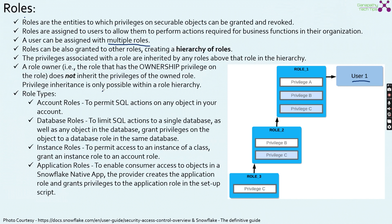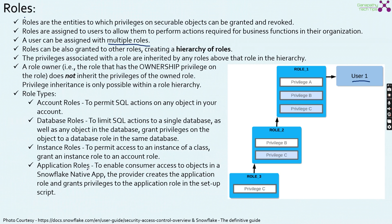There are four different role types: account roles, database roles, instance roles, and application roles. Account roles permit SQL actions to any object in your account. Database roles permit SQL actions to a single database as well as any object within that database — grants on objects are limited to objects in the same database. Instance roles permit access to an instance of a class; you grant the instance role to an account role. Finally, there is something called an application role, very helpful when defining or creating an application within Snowflake — for example, a Streamlit app. To enable customer access to objects in a Snowflake native app, the provider creates the application role and grants privileges to it in the setup script.